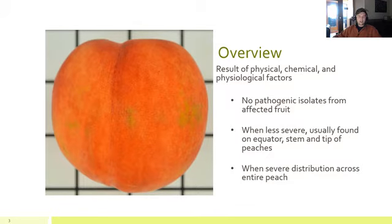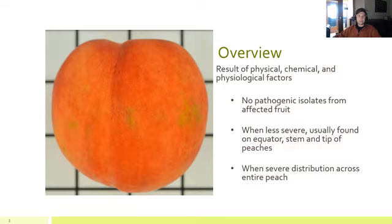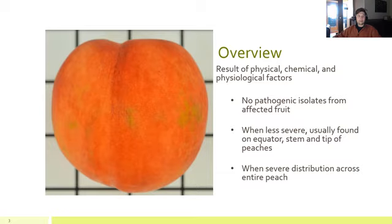So, what is bronzing? Bronzing is the discoloration of the skin of peach, which results in loss of marketability. This is caused by physical, chemical, and physiological factors. No pathogens have been isolated from affected fruit, meaning it's not caused by fungus, bacteria, viruses, or viroids.